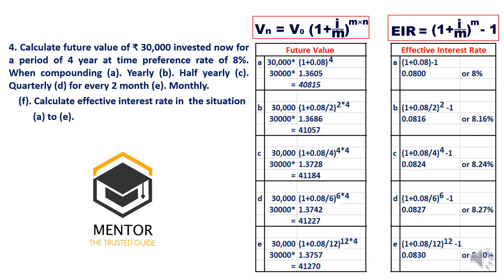Here I have furnished the answer to the exercise problem given in the last video. I mentioned I would provide the answer in the next video, so you can cross-check your answers here. I have provided two answers: future value of money with different compounding periods, and effective interest rate calculation when different compounding periods take place. Please do cross-check these answers.